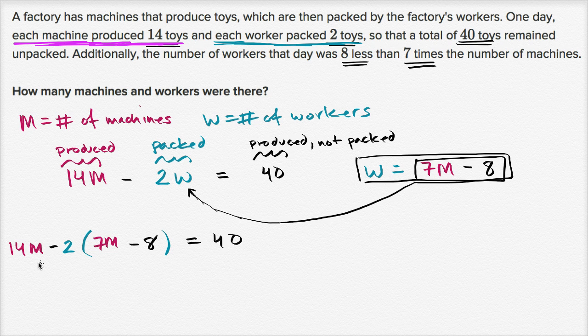So now it's just a little bit of algebra. 14M, and then negative two times seven M is negative 14M. And then negative two times negative eight is plus 16. And then that's going to be equal to 40.